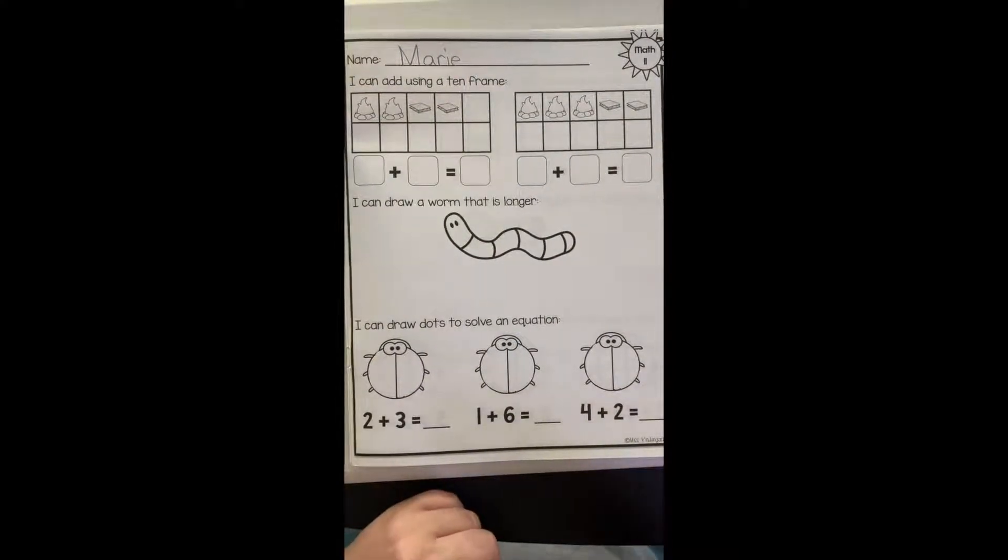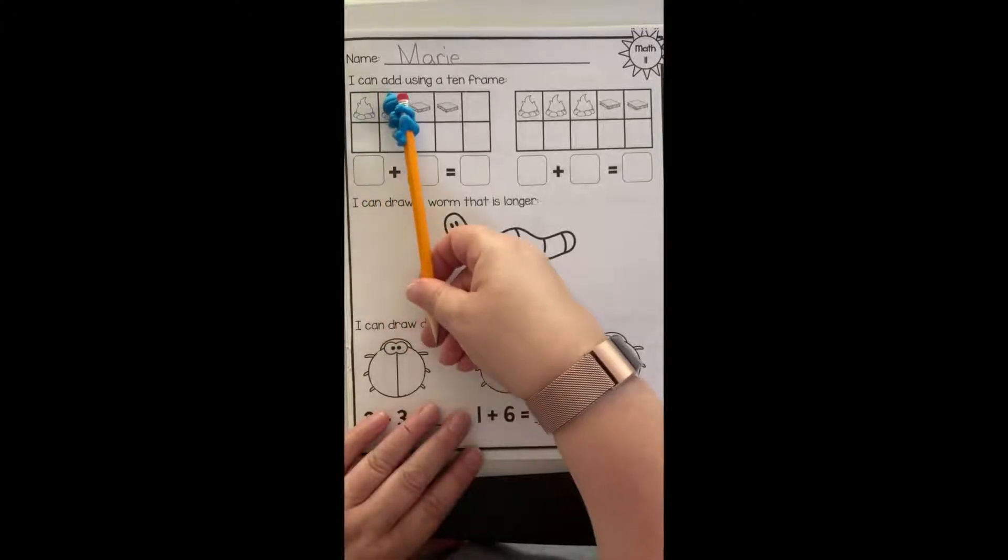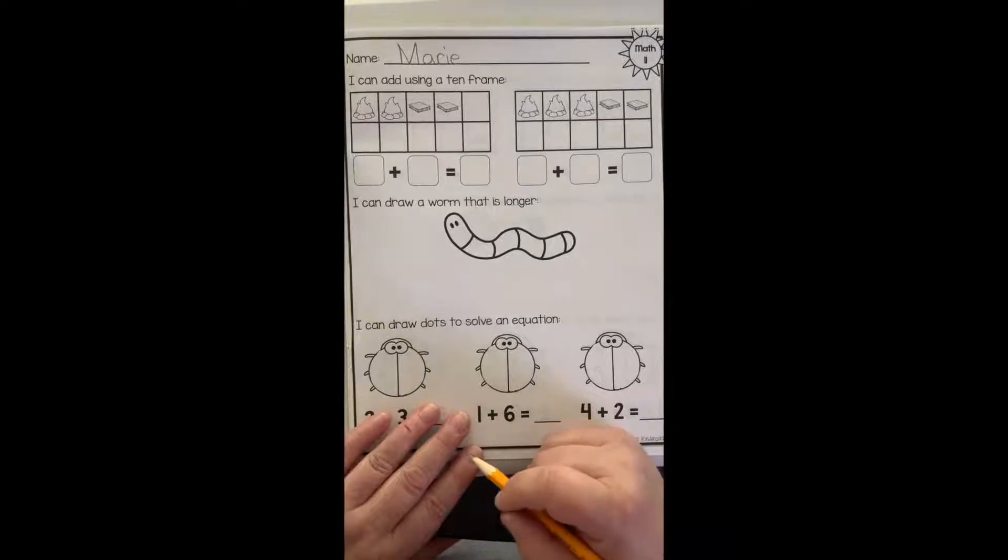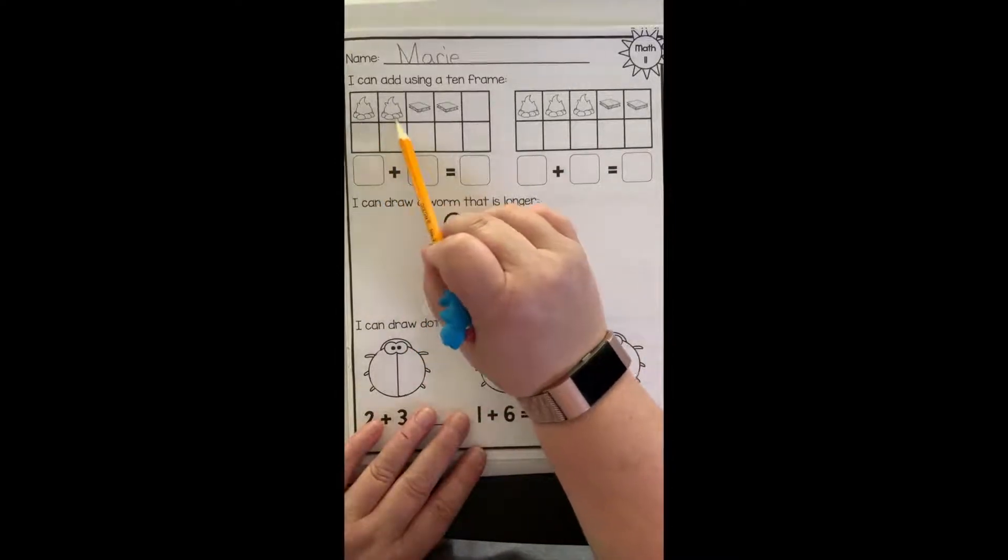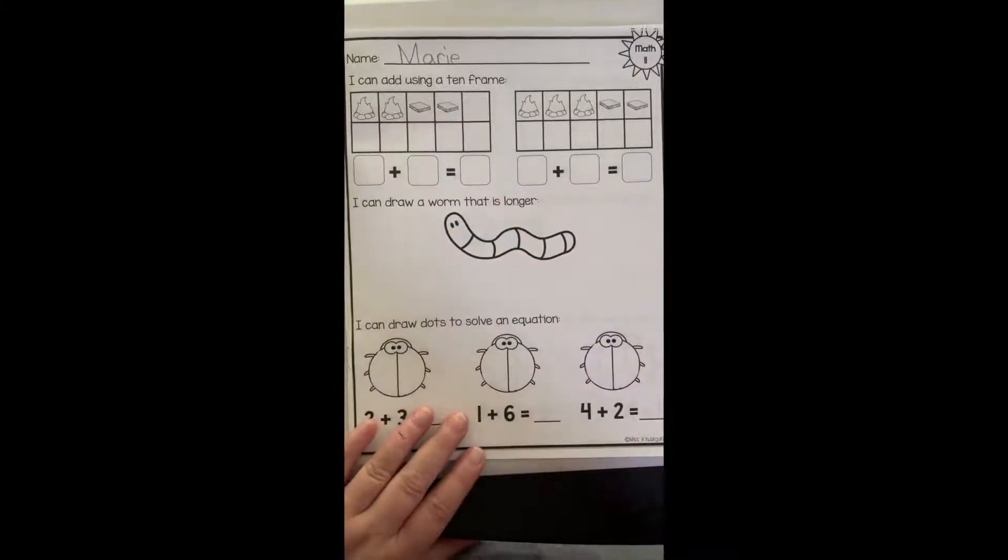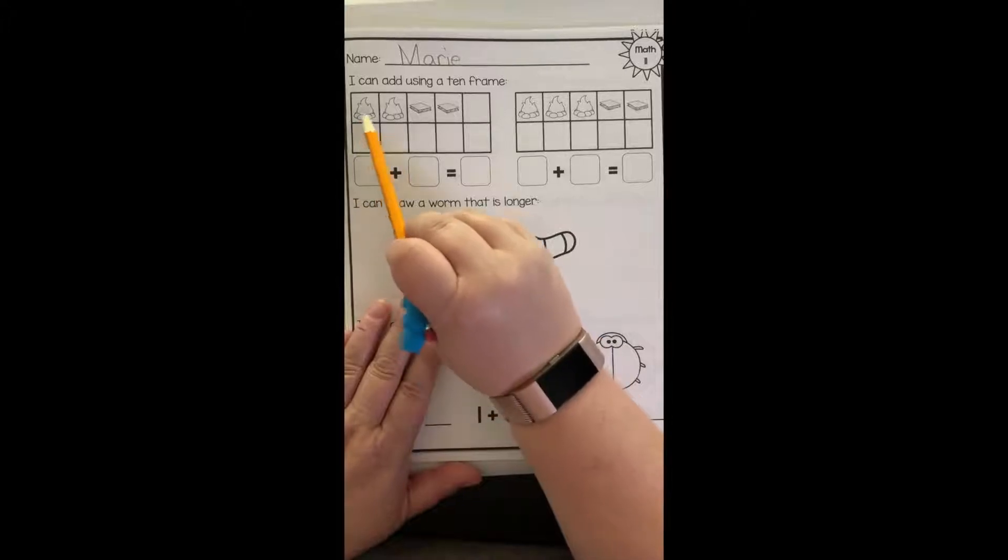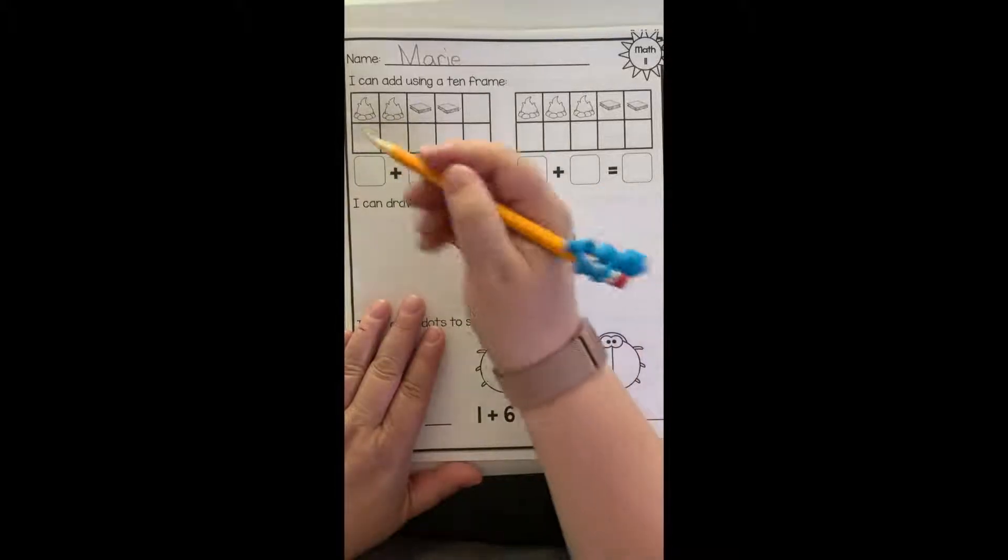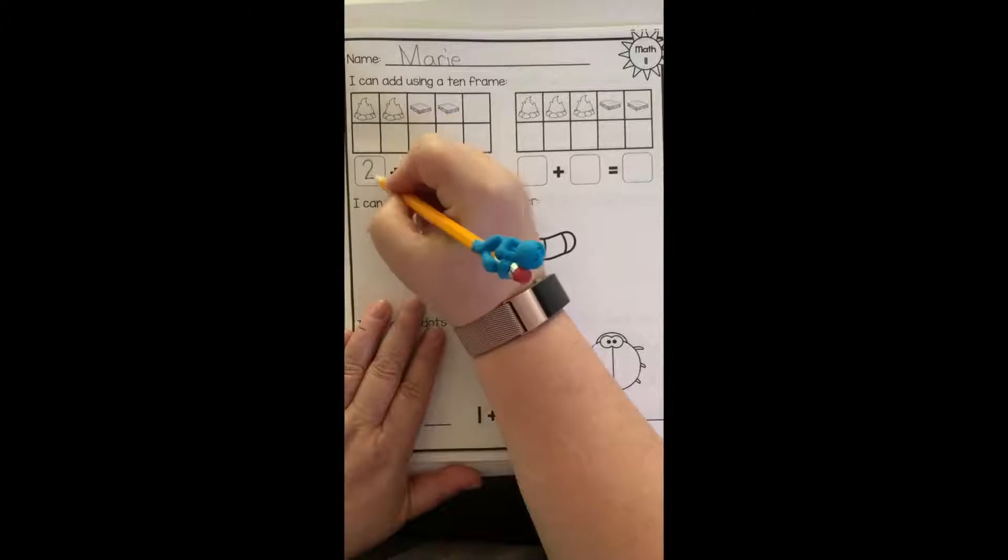Okay, let's read our first section. I can add using a ten frame. So how I'm going to add is I'm going to add how many fires plus how many s'mores. I wonder if this is in Mrs. Pop's classroom. So how many fires, let's count them. One, two. I see there are two fires. So down here, I'm going to put two under the two fires.